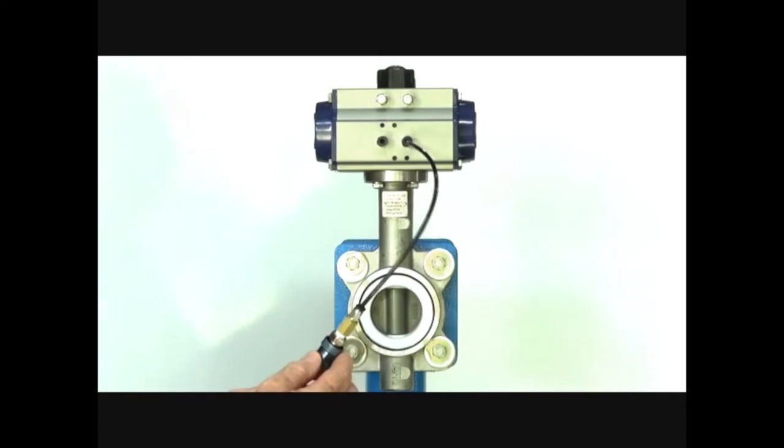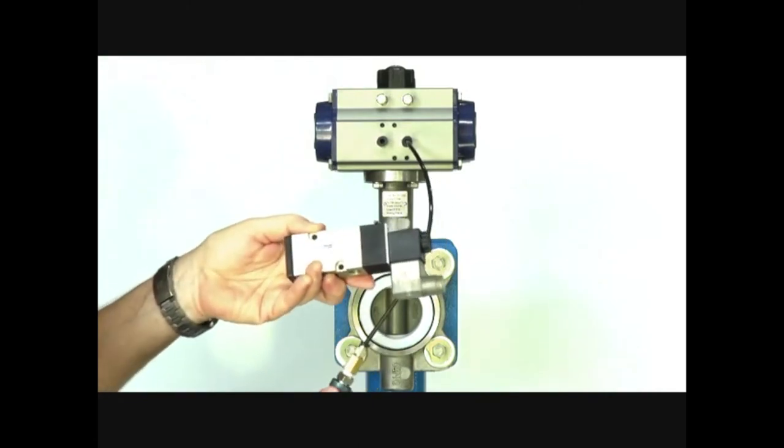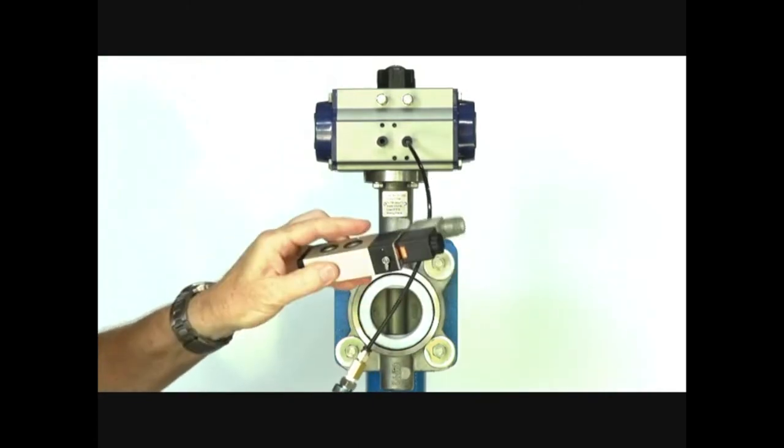To operate the little 3-2 valve I have here, I've kept this simple. Normally we put a 5-2 type of valve on here, similar to this.